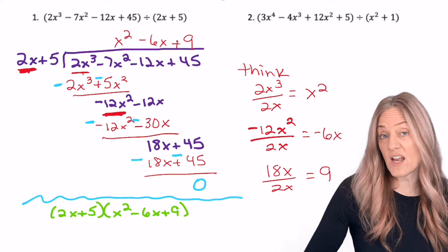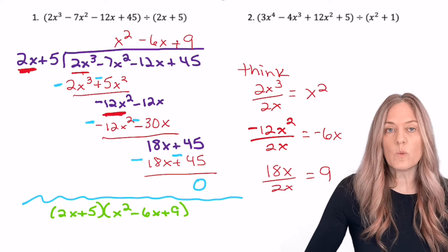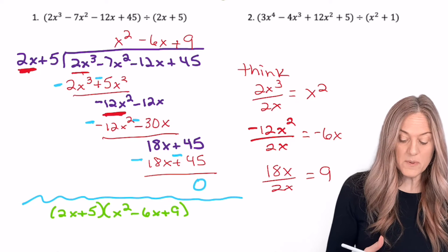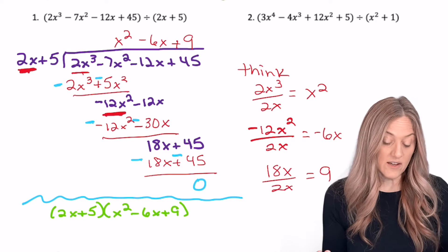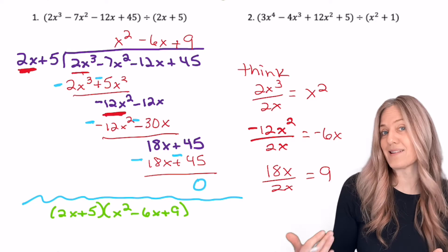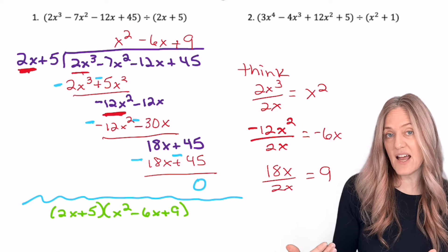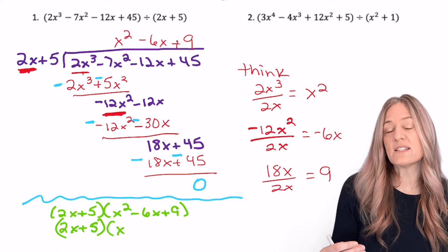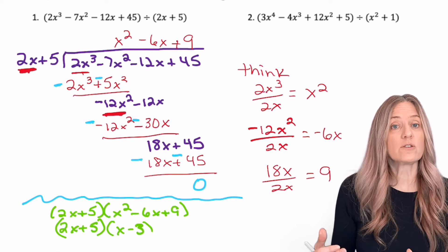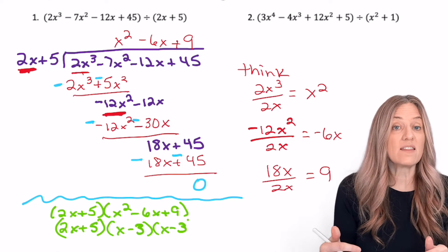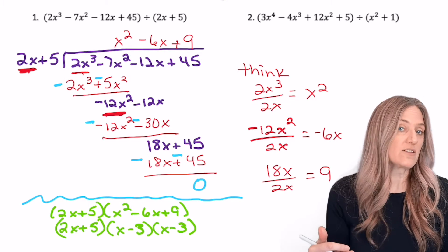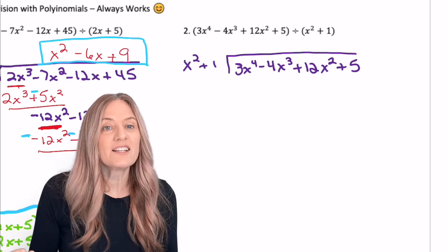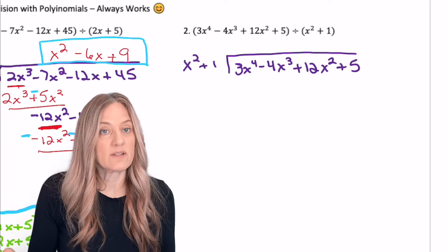As a way of checking our division, we could now multiply 2x plus 5 into x squared minus 6x plus 9. Also, if we wanted to get fully factored form, we could factor the trinomial and have fully factored form. Let's try this next one.